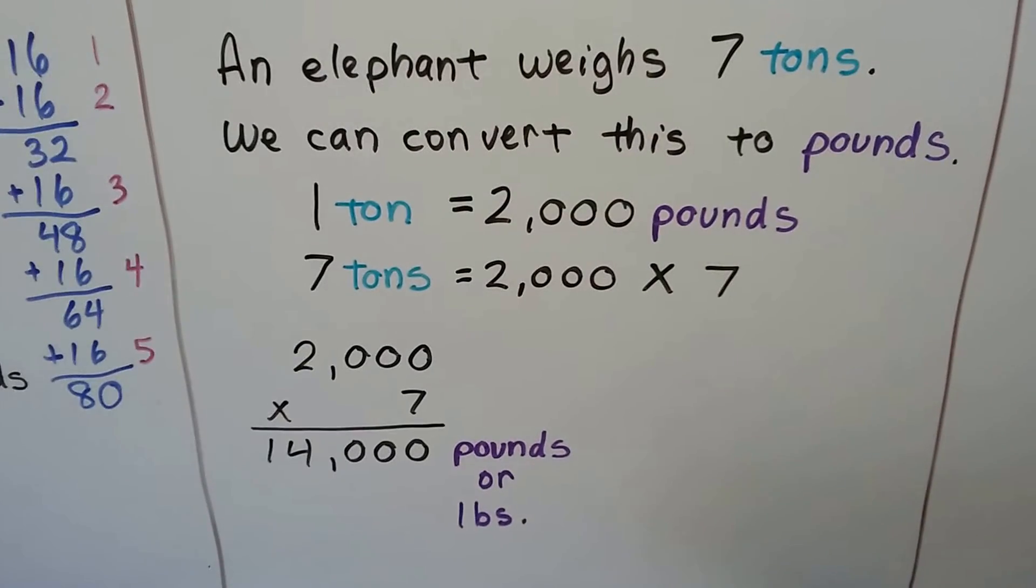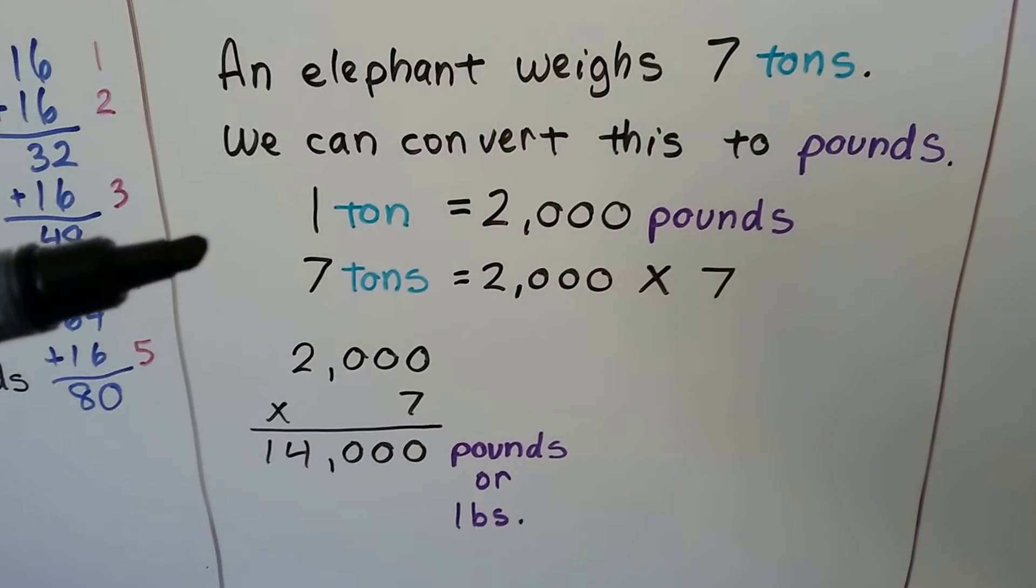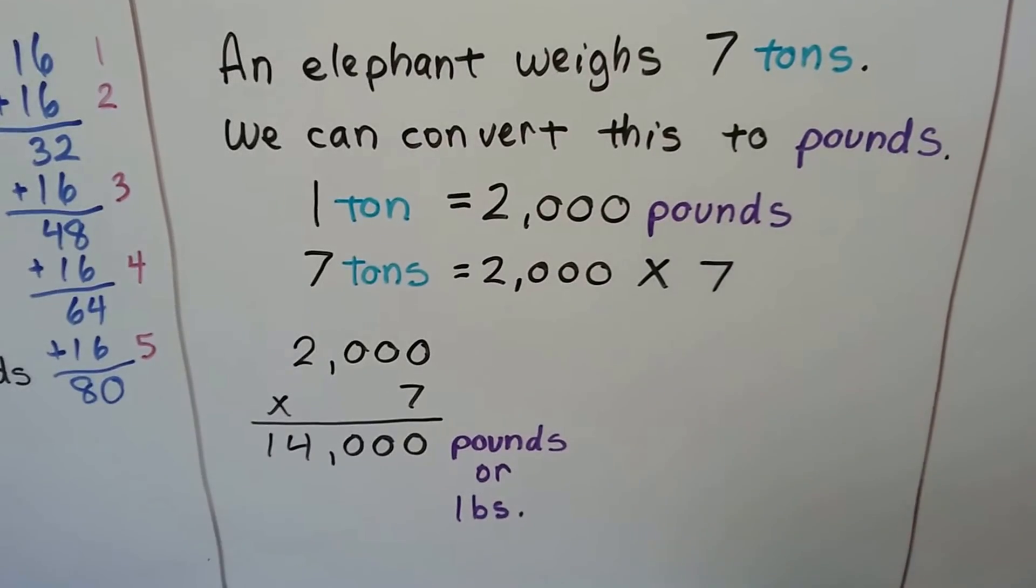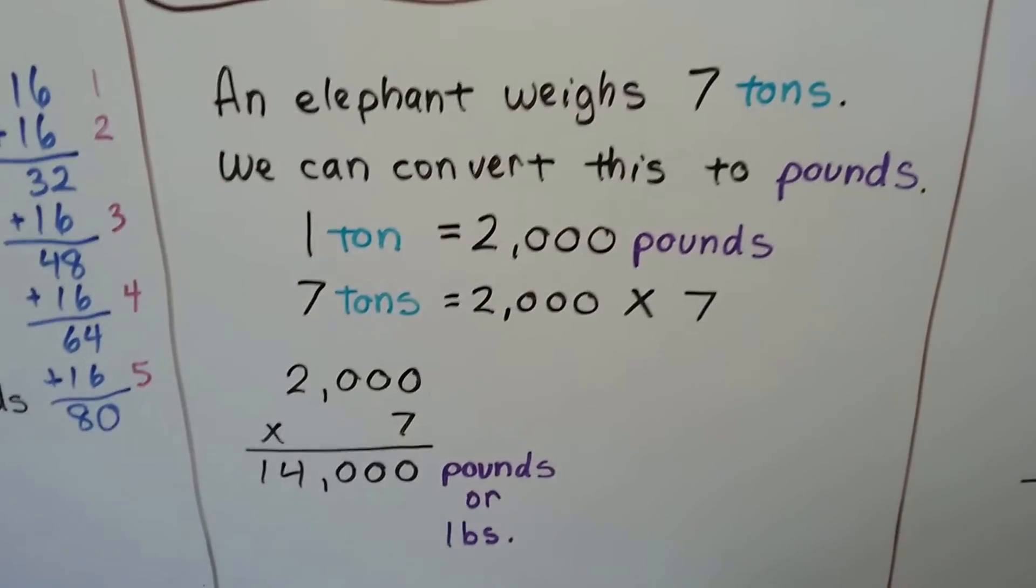Now, if there were two elephants, and they were both 7 tons, we can convert that to pounds by doing 14,000 plus 14,000. We'd have two of them.